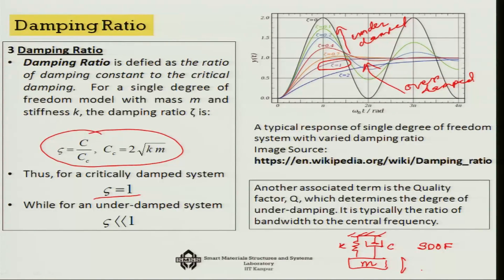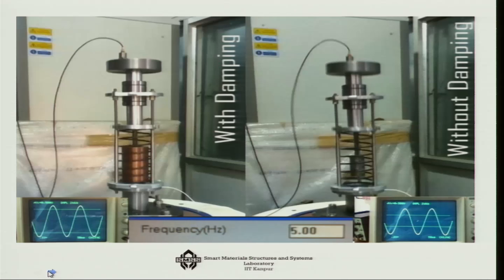The quality factor Q also determines the degree of underdamping and is typically the ratio of the bandwidth to the central frequency of the system. The next slide shows how damping changes the response of a system.